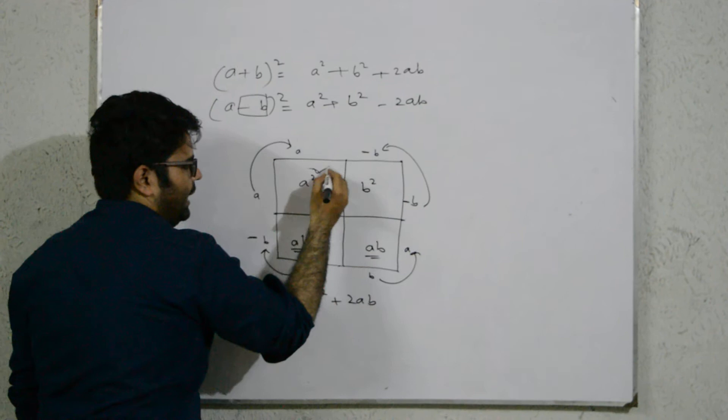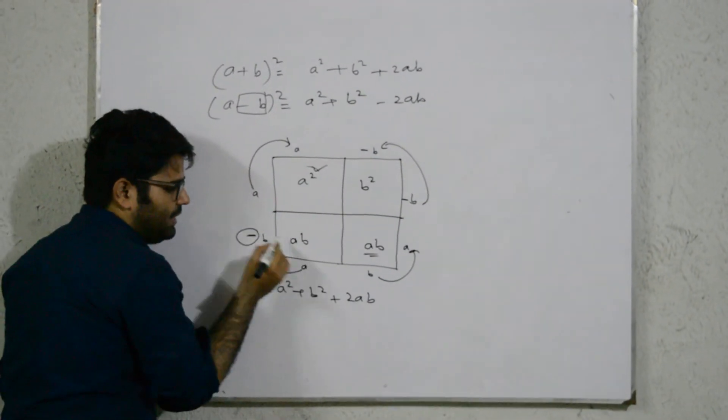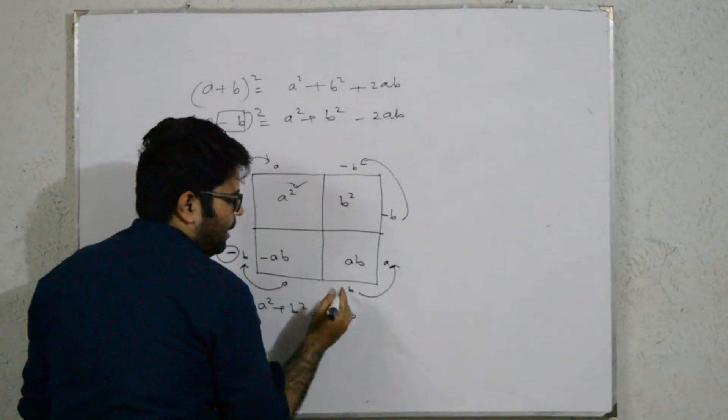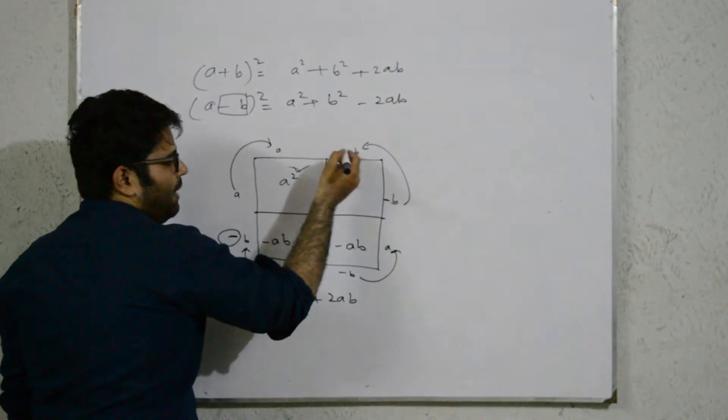If you multiply the same from a side, then it is a squared. This is a squared. When a and b are minus sign, then you have minus sign. It will have minus sign.